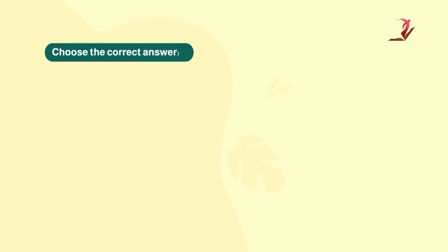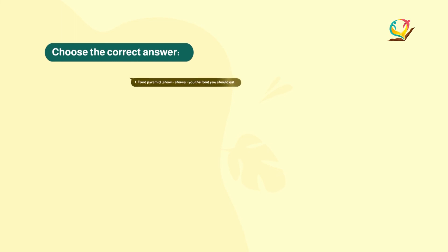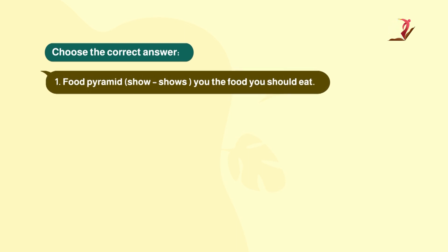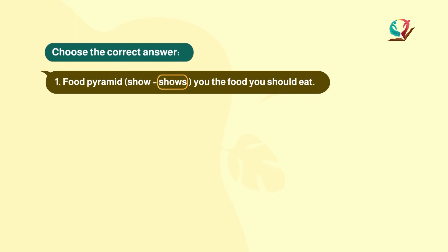Let's do the exercises on the cards. Number one: choose the correct answer. Food pyramid — هرم الغذاء — show or shows you the food you should eat? The food pyramid is singular, so the answer is 'shows' — with 's' — because this is a Present Simple scientific fact.